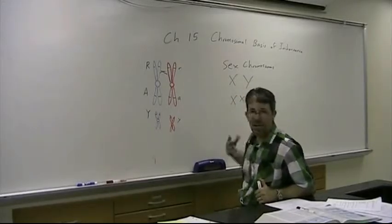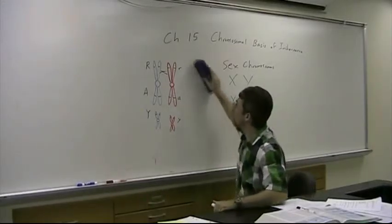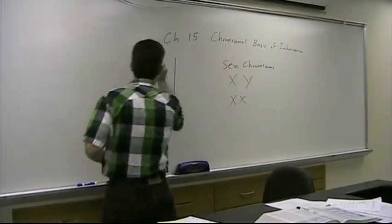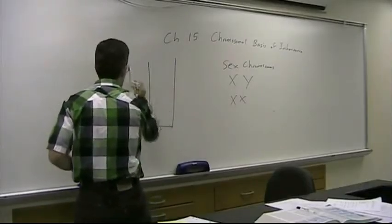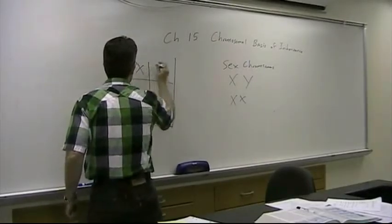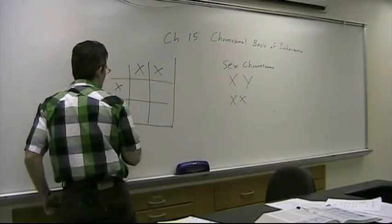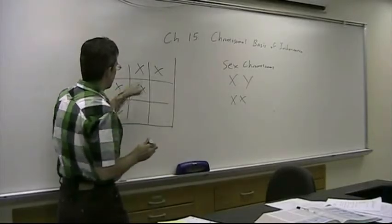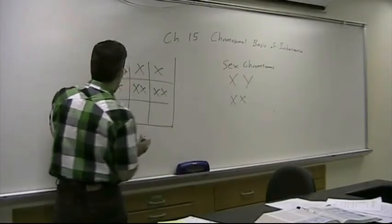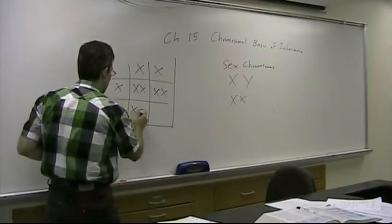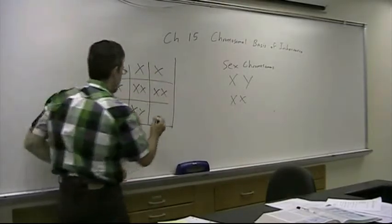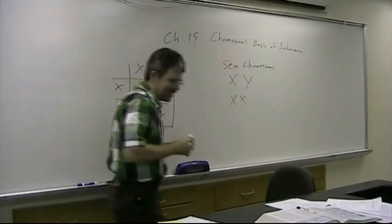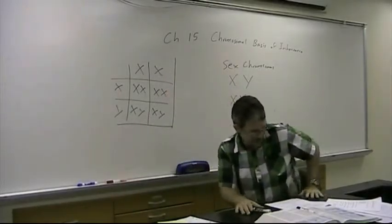But we can look at the XY system in a Punnett square, because after all it is the chromosomes that we're inheriting. So if we're going to track the chromosomes on a Punnett square, we'll put mom here, separate the two X's, we'll put dad here, X and Y. If this sperm fertilizes that egg, baby girl. If this sperm fertilizes that egg, baby girl. If that sperm fertilizes that egg, baby boy. And if this one fertilizes that one, baby boy. What's the ratio? 50-50.